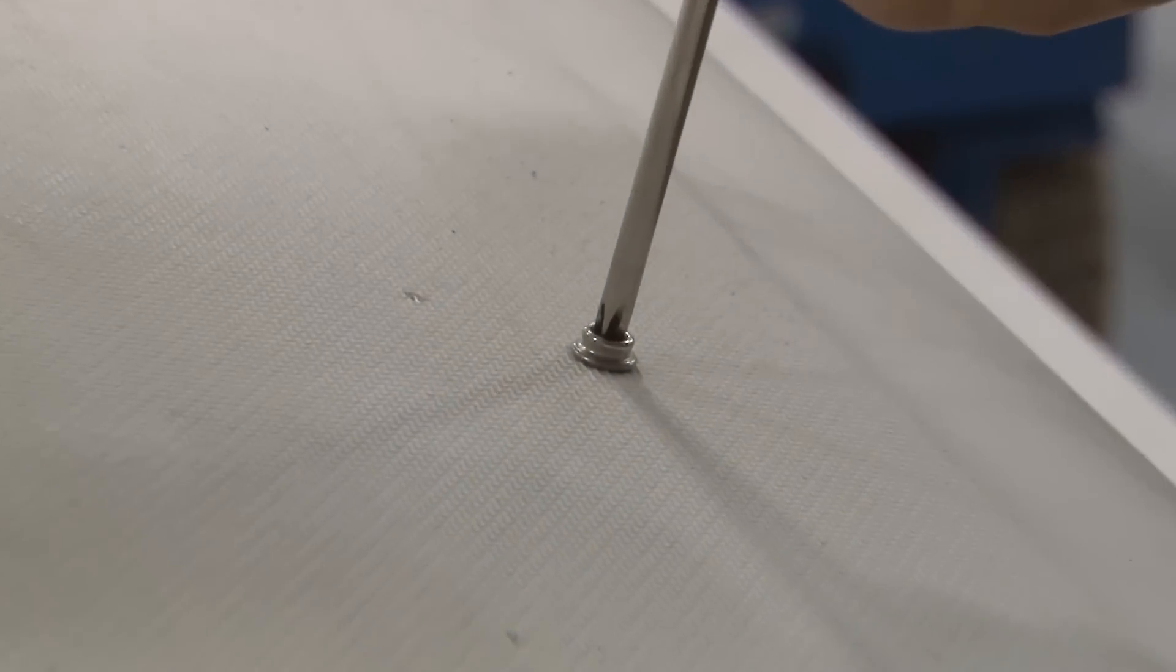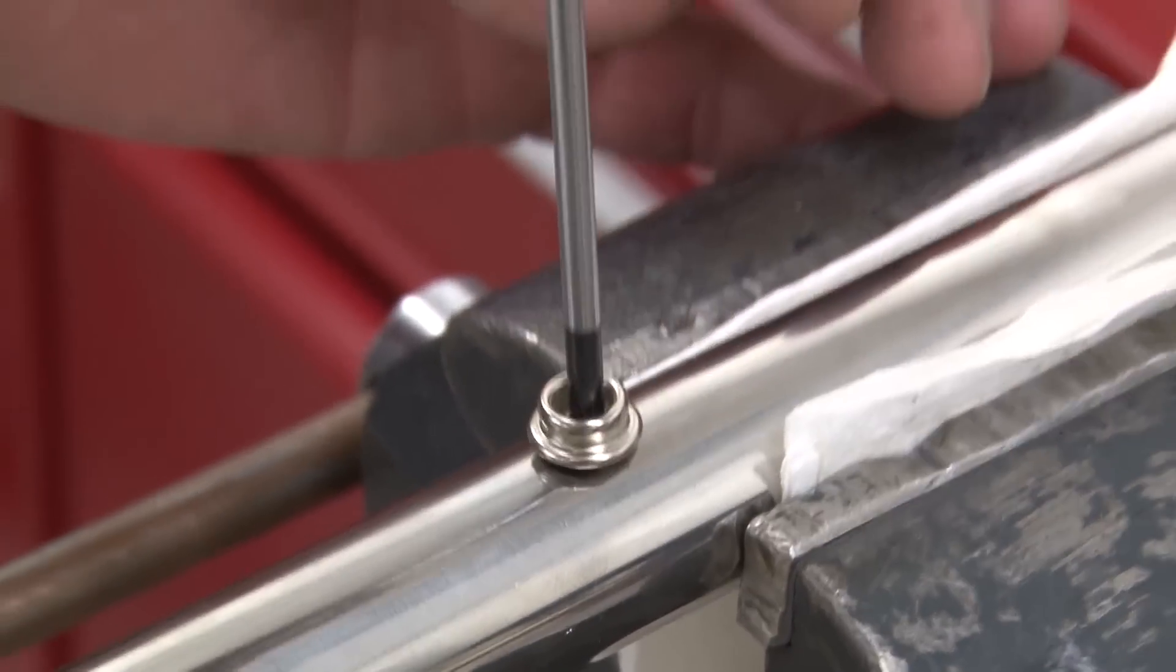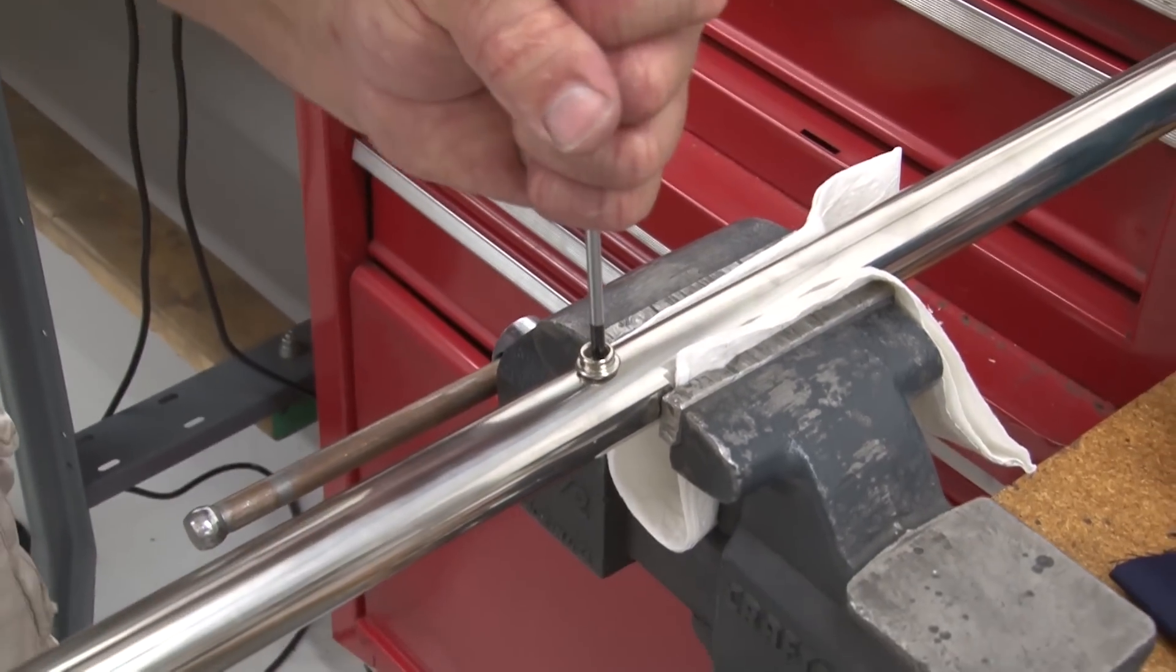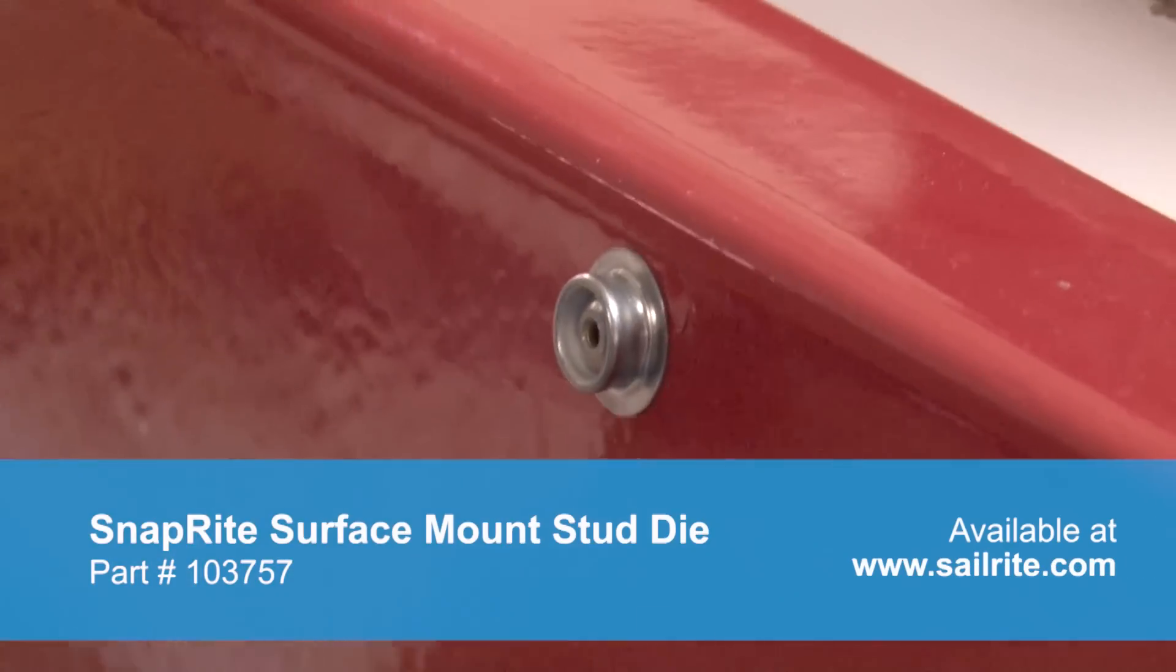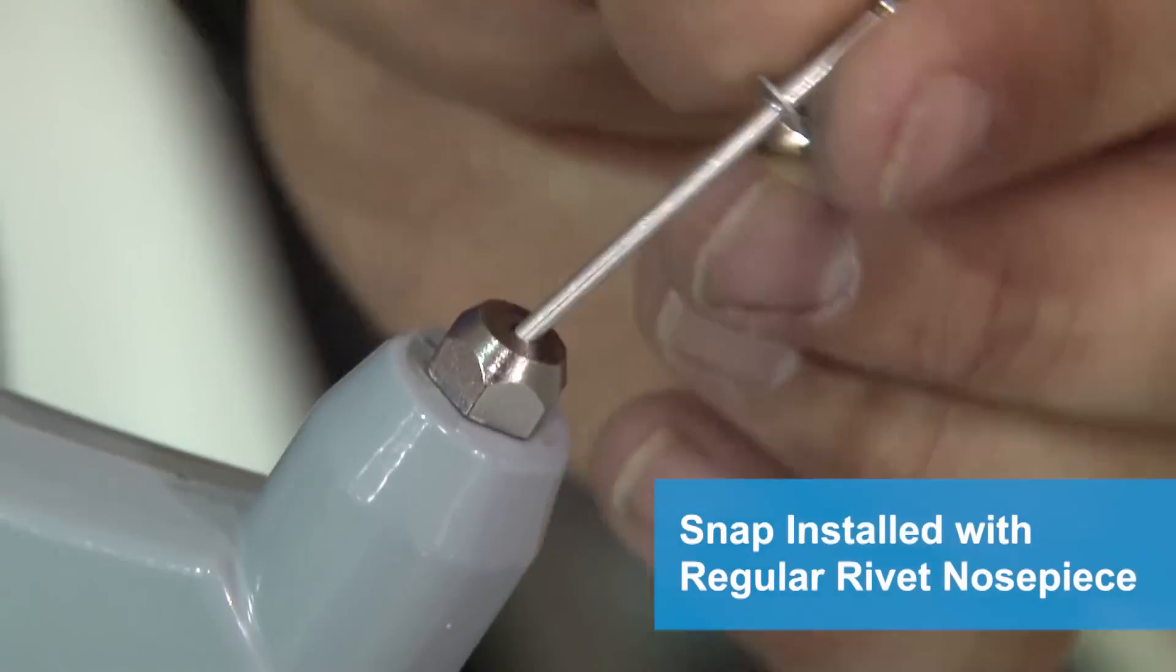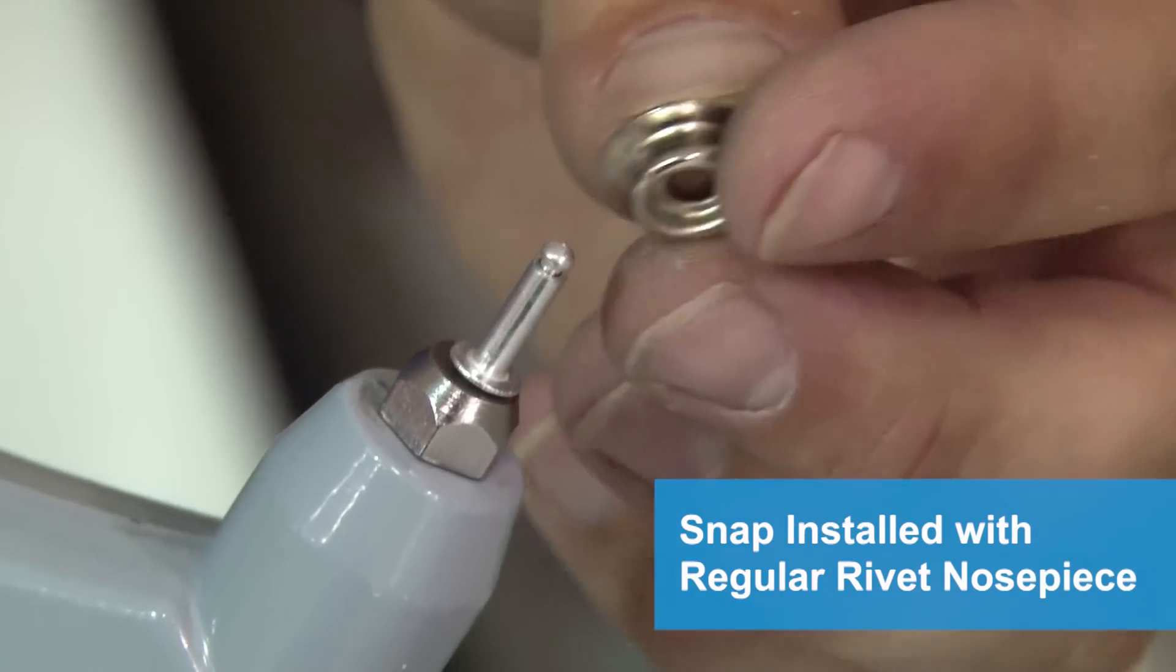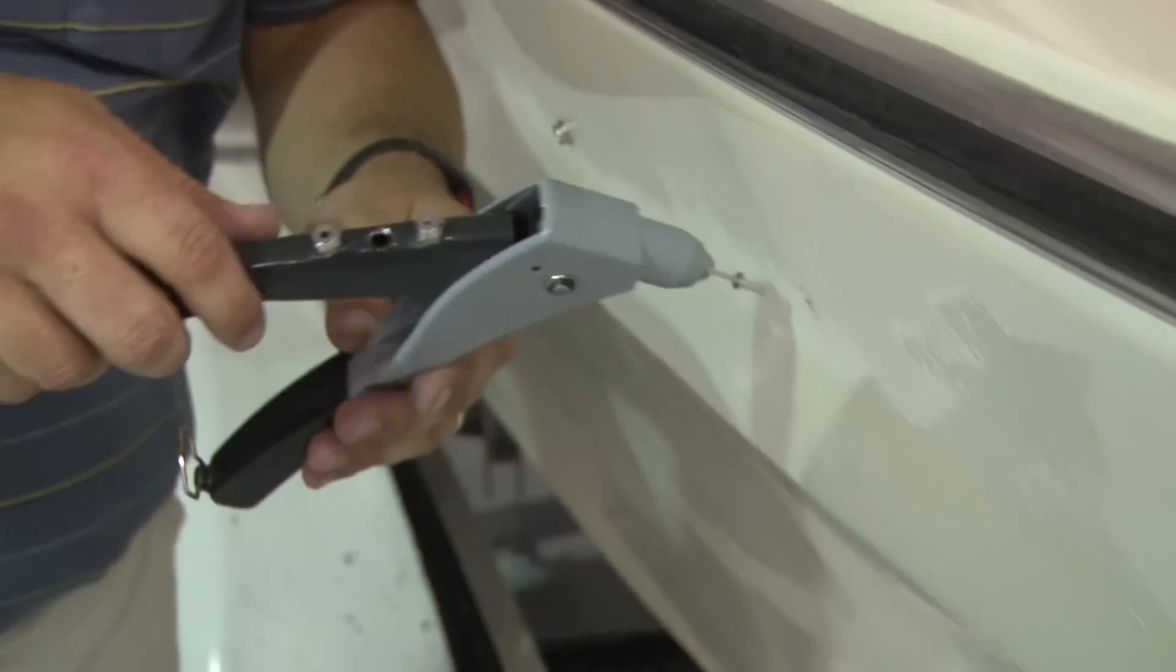Typically snap studs are installed to hard surfaces using standard Phillips screws or machine screws. Using the new Snaprite Surface Mount Stud Die, you can do it with a pop rivet. A snap stud can be installed with a regular nose piece that comes with a riveting tool. However, there are some notable disadvantages.